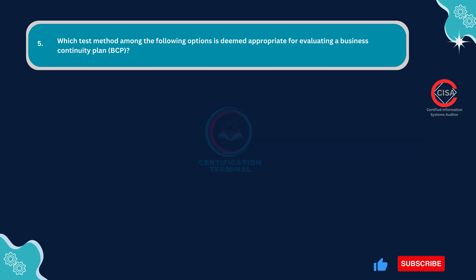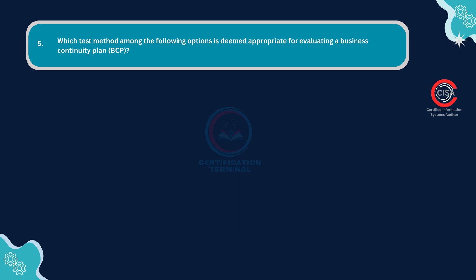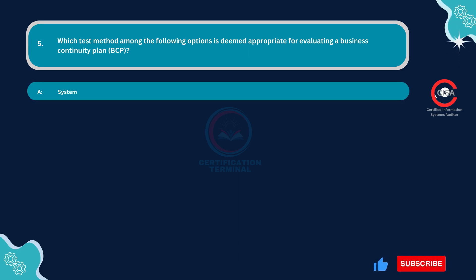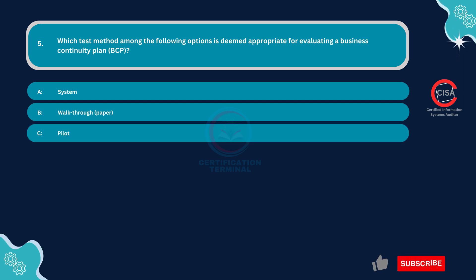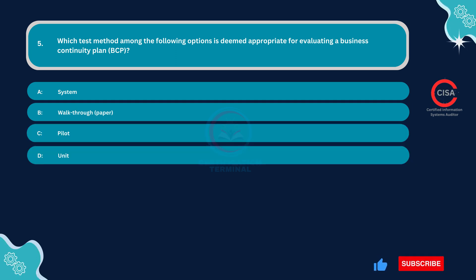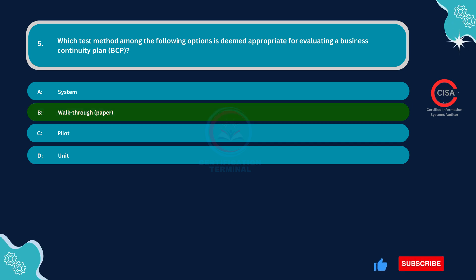Question number five: Which test method is deemed appropriate for evaluating a business continuity plan? Option A: System. Option B: Walk-through paper. Option C: Pilot. Option D: Unit. The correct answer is Option B: Walk-through paper.